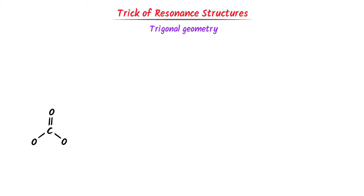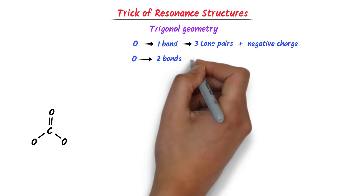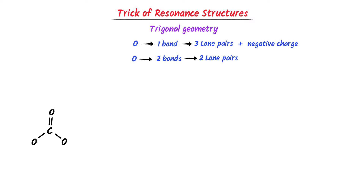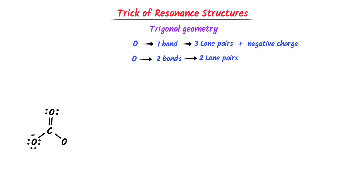Consider the carbonate ion. Remember that when oxygen forms a single bond, it has three lone pairs of electrons and a negative charge. If oxygen forms a double bond, it has two lone pairs of electrons and no charge. In the case of carbonate ion, carbon is double bonded to the first oxygen and single bonded to the second and third oxygen. The trick for this type of question is: rotate 90 degrees and reflect in the mirror.